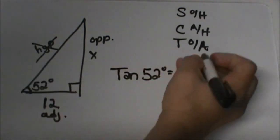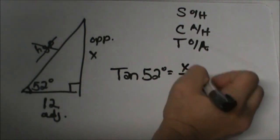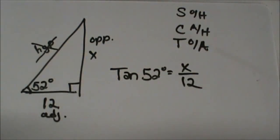Now we are going to write a ratio. Opposite is x, we do not know that side. Adjacent is 12. That is how we set it up. There is the first part.